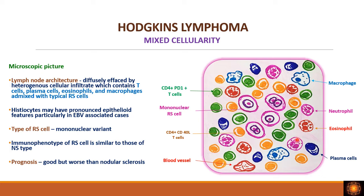Microscopically in mixed cellularity, as the name suggests, all types of cells are seen: T cells expressing CD4, eosinophils, neutrophils, plasma cells, and macrophages. The RS cell type is the mononuclear variant. Immunophenotyping is the same as lacunar cells — CD15, CD30, and PAX5 positive. Prognosis is better than some subtypes, but worse than nodular sclerosis.